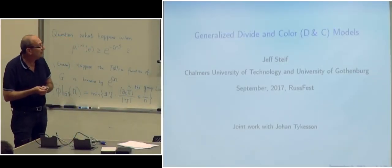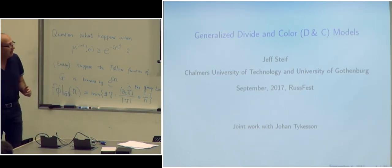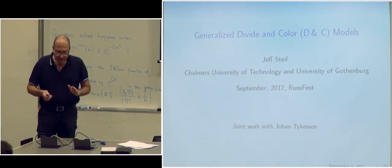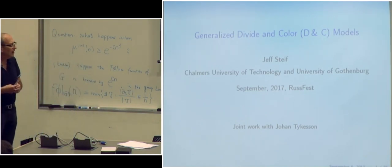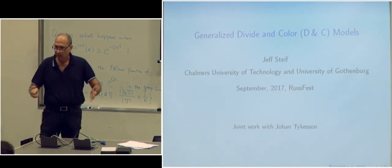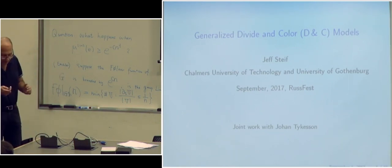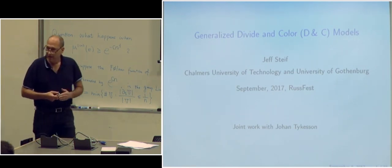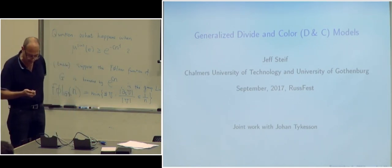I'm going to talk about generalized divide and color models. This is joint work with Yuan Tickerson at Chalmers. This is a class of models that for many years I felt deserved some type of study. They seem very natural from a probabilistic point of view, and there are a number of examples in probability — models that we all know — that fall into this context. It seemed reasonable to study these, and I want to describe some results we have, along with a couple of questions I'm very interested in that I don't know the answer to.